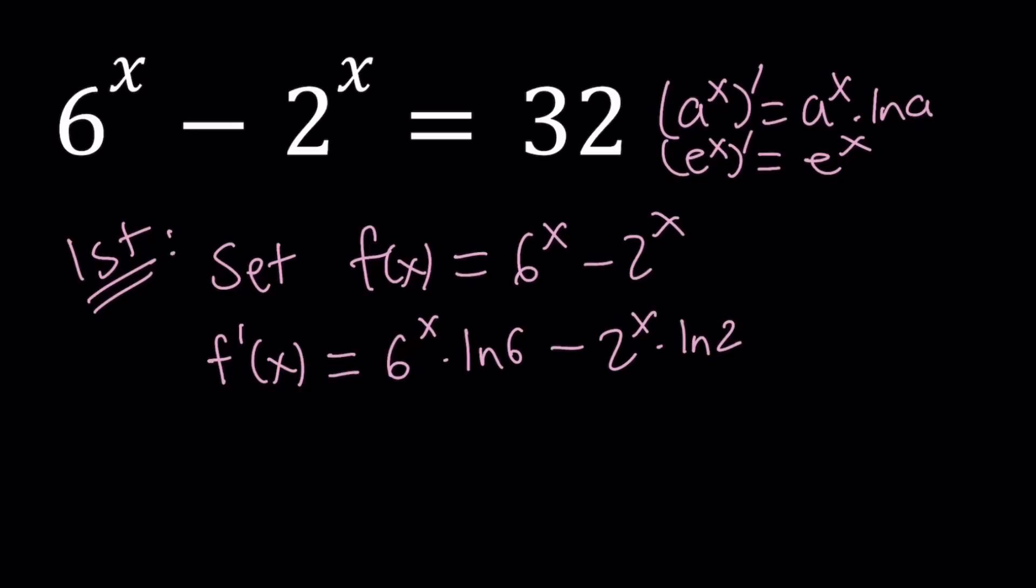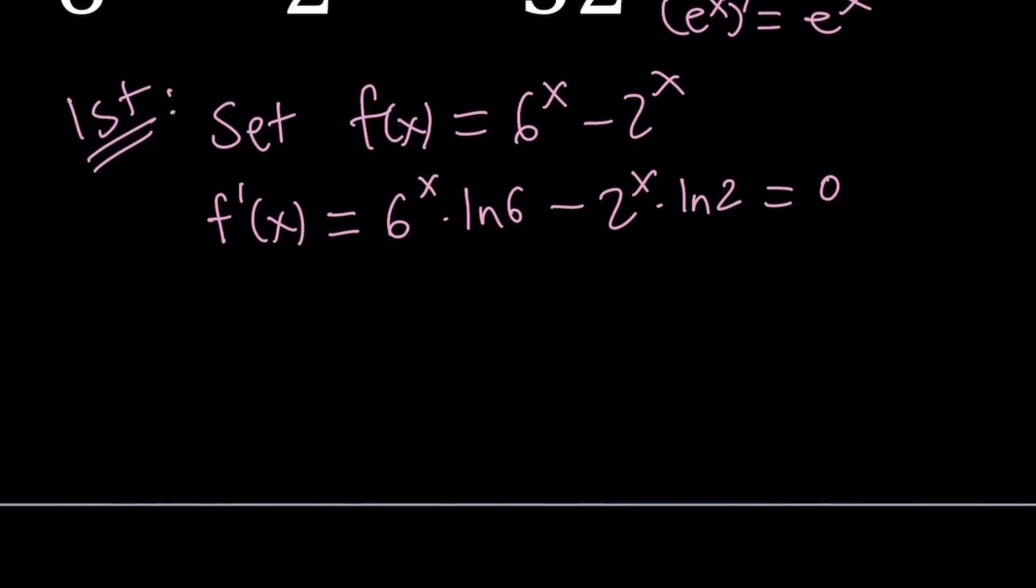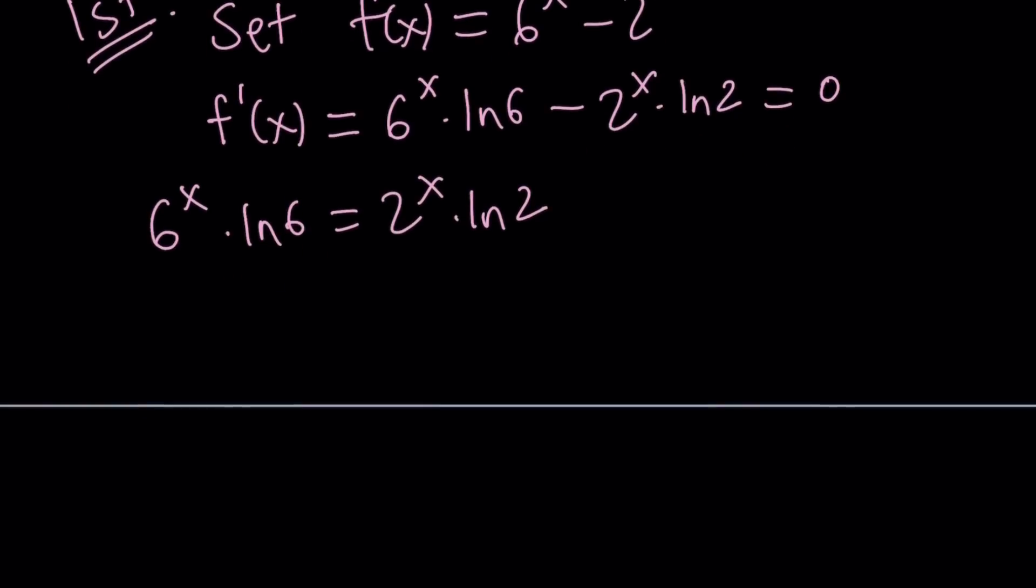And we're going to set this equal to 0, because we want to find where this function, or if this function has any horizontal tangents. In other words, critical values. Sometimes critical values are points where the derivative does not exist, or the derivative is 0. So let's go ahead and put the 2 to the x on the right-hand side. So we're going to get the following. And then divide both sides by 2 to the x, that's going to give you 3 to the x, and divide by ln 6, that's going to give you ln 2 over ln 6.